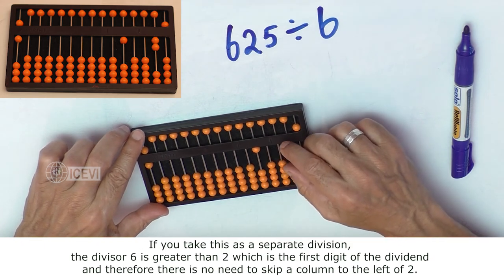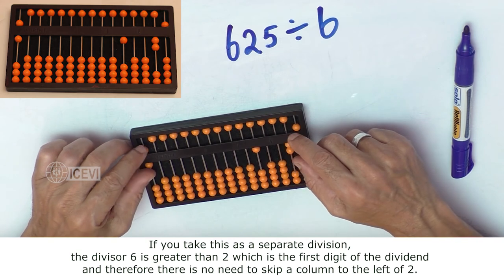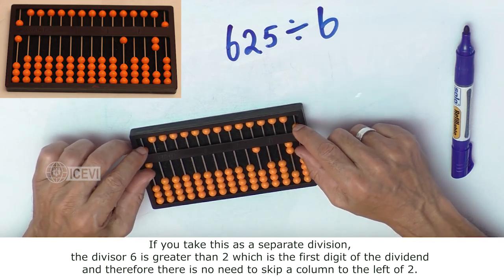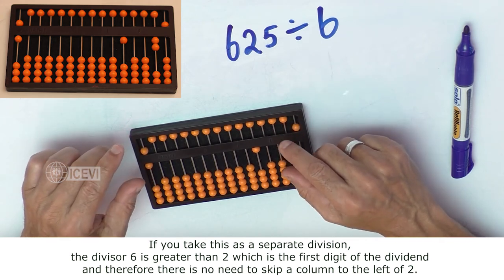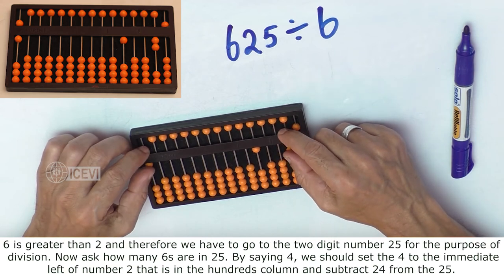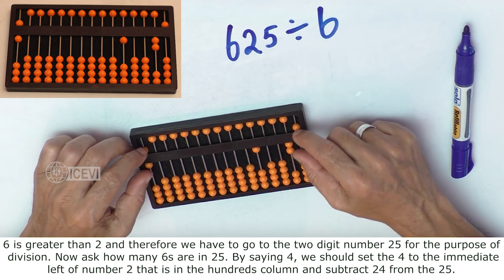If we take this as a separate division, the divisor 6 is greater than 2, which is the first digit of the dividend, and therefore there is no need to skip a column to the left of 2. 6 is greater than 2 and therefore we have to go to the 2-digit number 25 for the purpose of division.